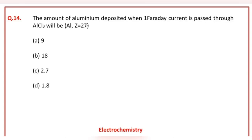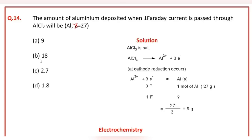The amount of aluminium deposited when one Faraday of current is passed through aluminium chloride will be: A is the correct answer option.